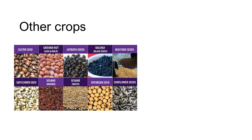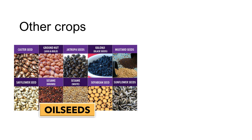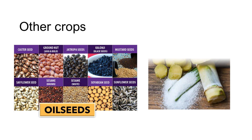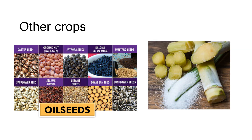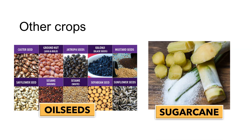Other crops such as oilseeds including mustard, groundnut, linseed, sunflower etc. are grown in large quantities in several states of India. Sugar is made from sugarcane and India is one of the largest producers of sugarcane in the world. It is mainly grown in Uttar Pradesh, Maharashtra, Karnataka, Tamil Nadu, Bihar and Gujarat.